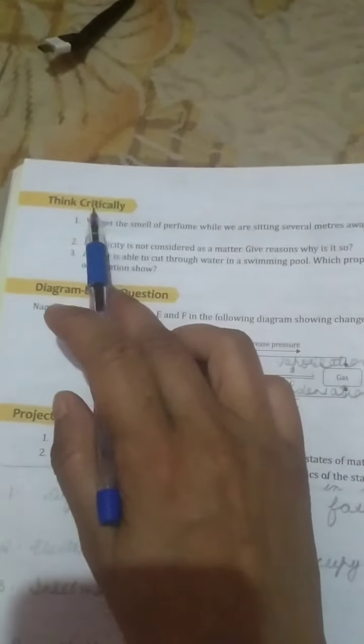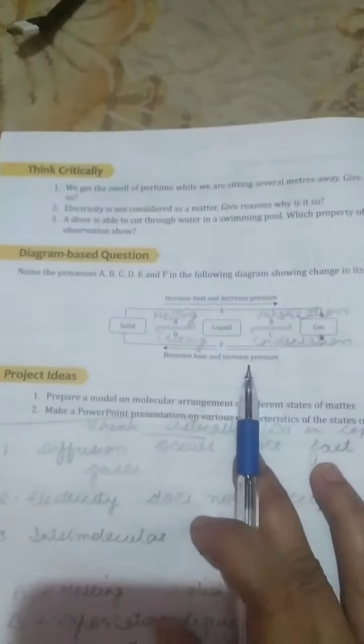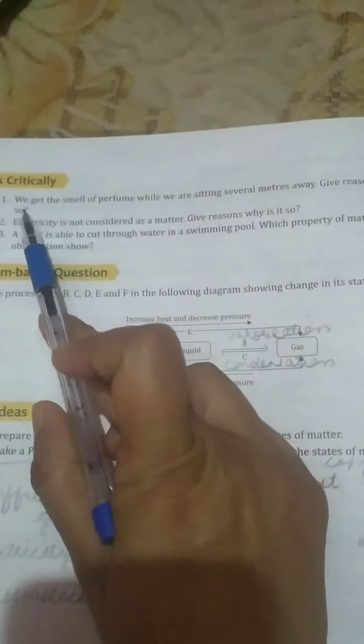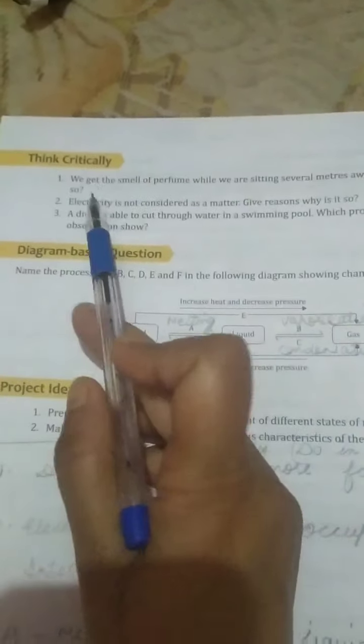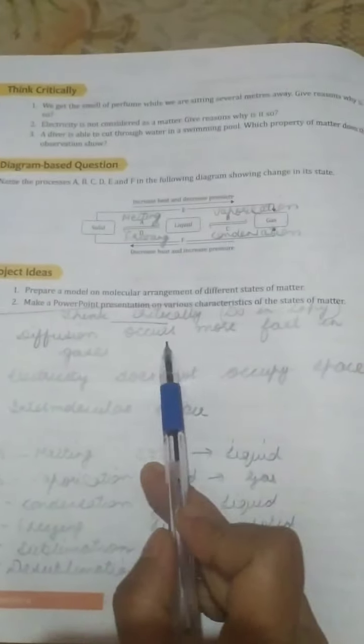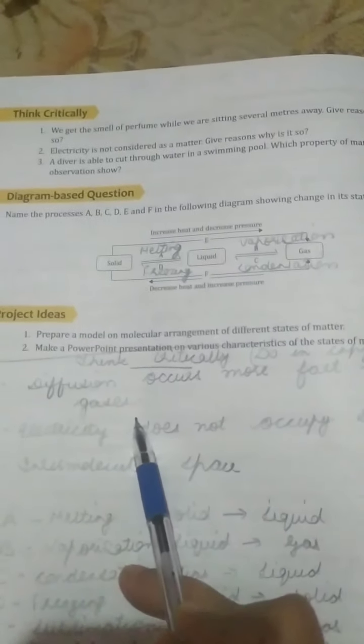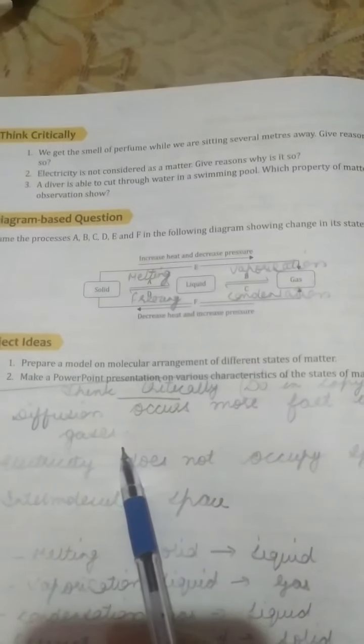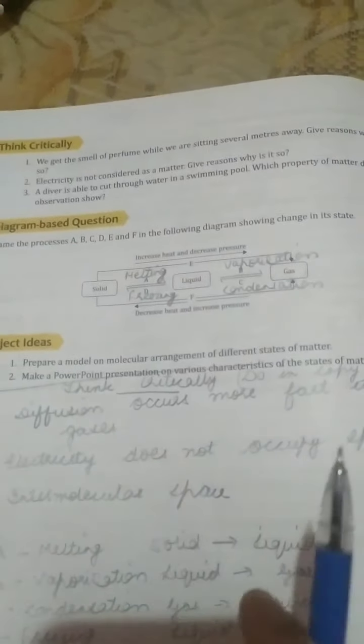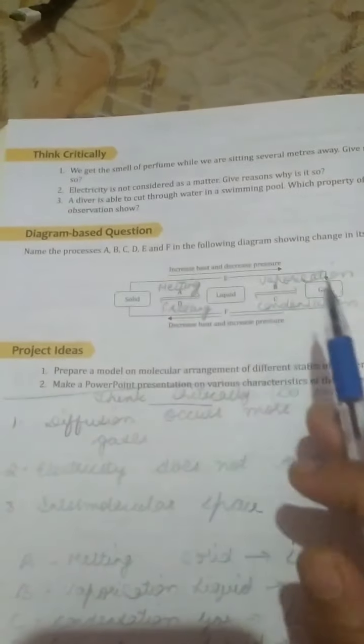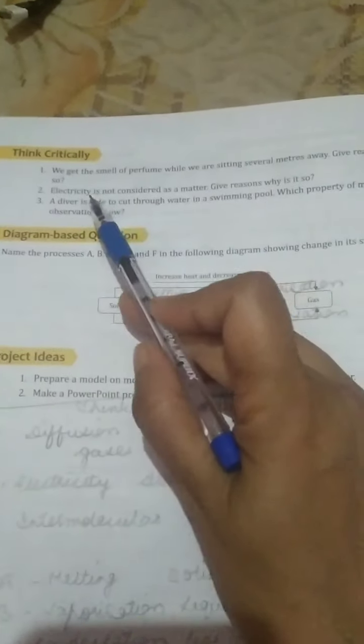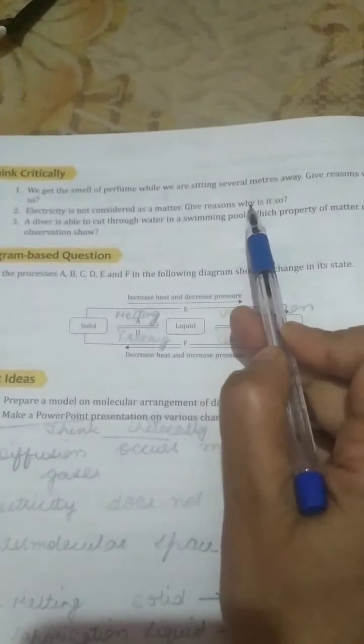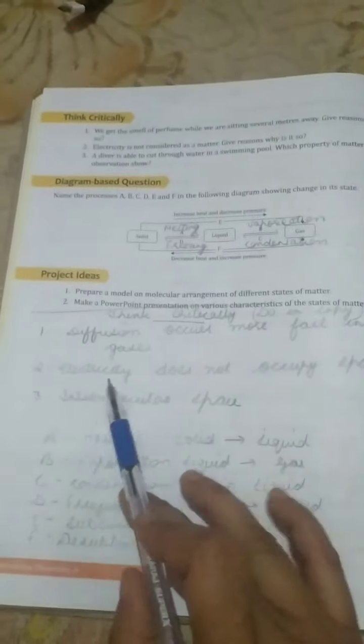Next, students, think critically. This you also have to write down in your copy. First question: we get a smell of perfume while we are sitting several meters away. Give reason why it is so. Answer: diffusion occurs more fast in gases because gas molecules are away from each other. Their intermolecular space is too much, so we can easily smell the perfume sitting several meters away from the person who has applied that perfume.